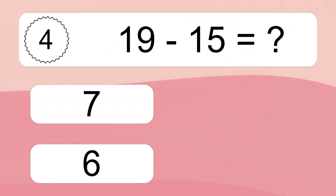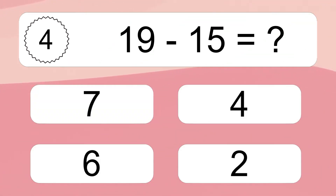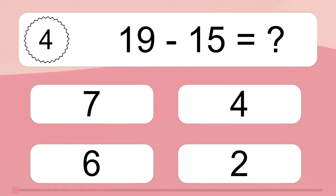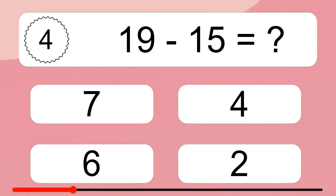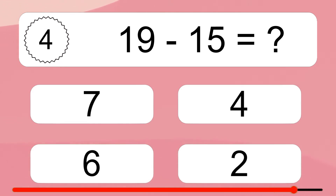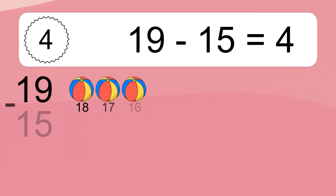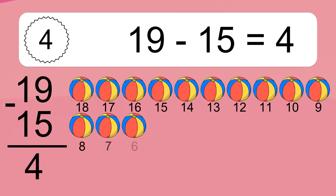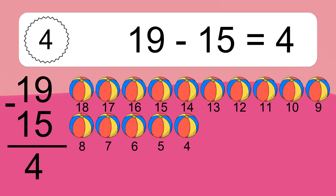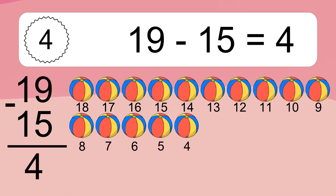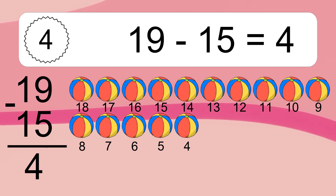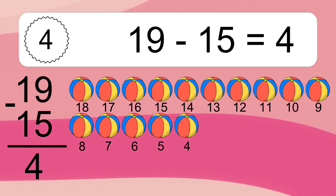19 minus 15 equals what? 19 minus 15 equals 4. Let's count it. 18, 17, 16, 15, 14, 13, 12, 11, 10, 9, 8, 7, 6, 5, 4.